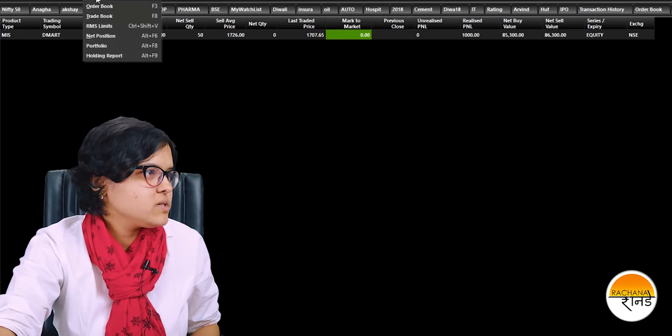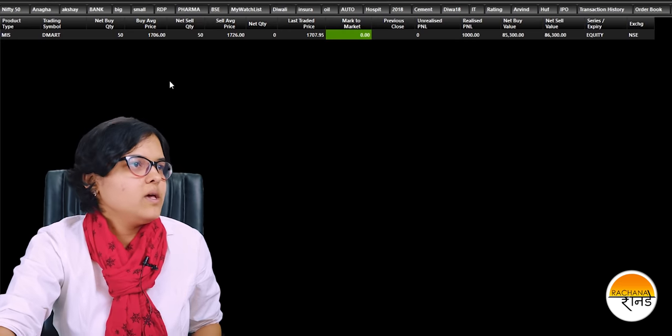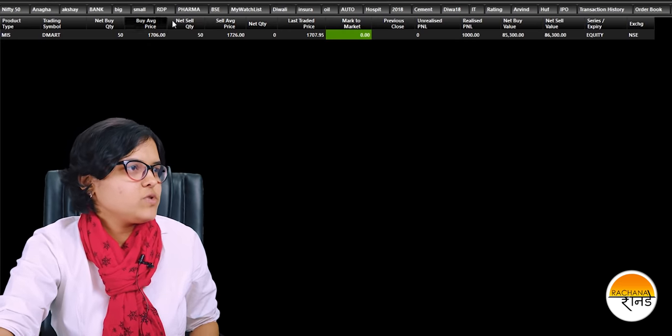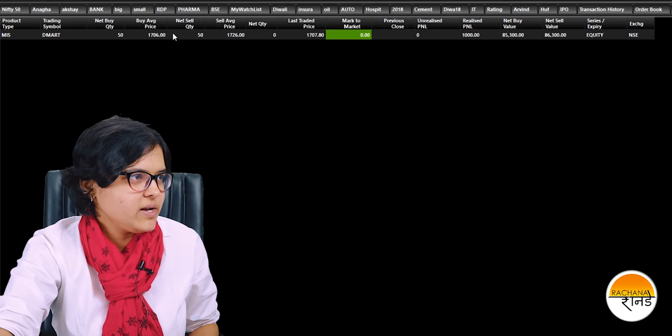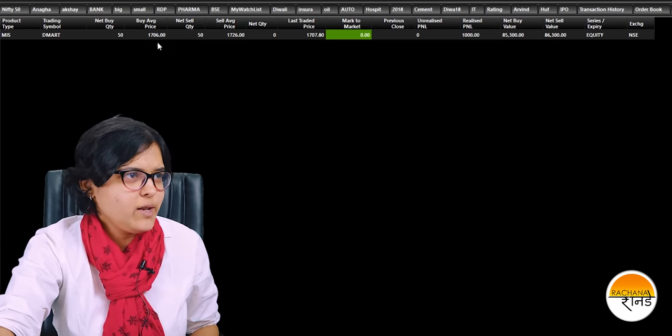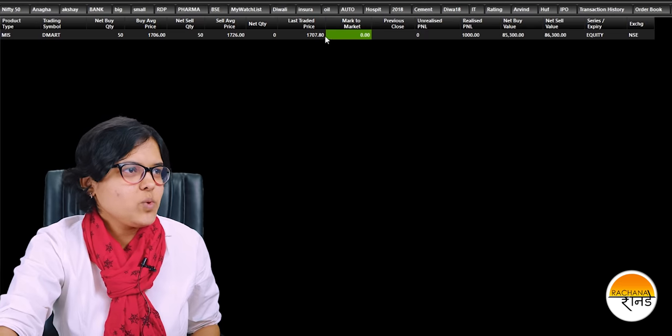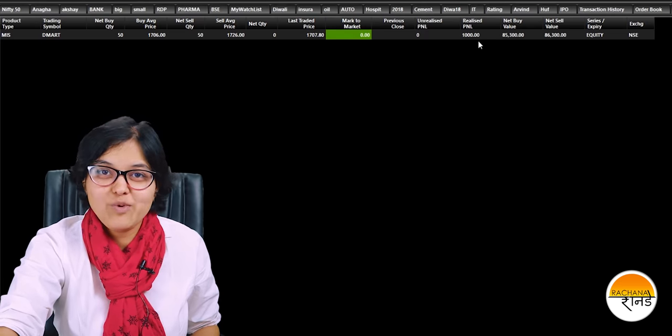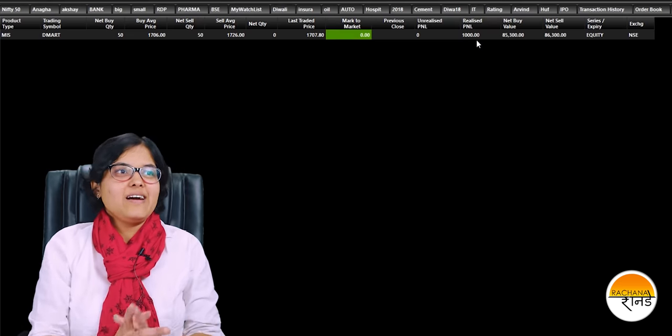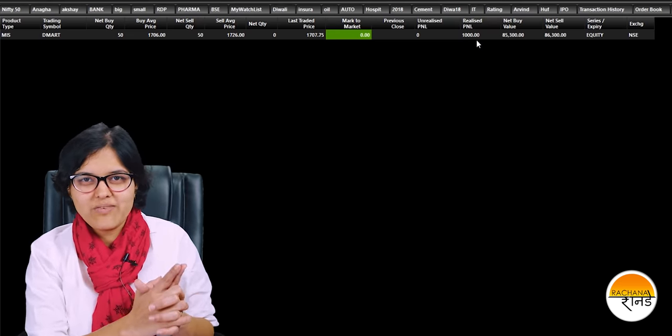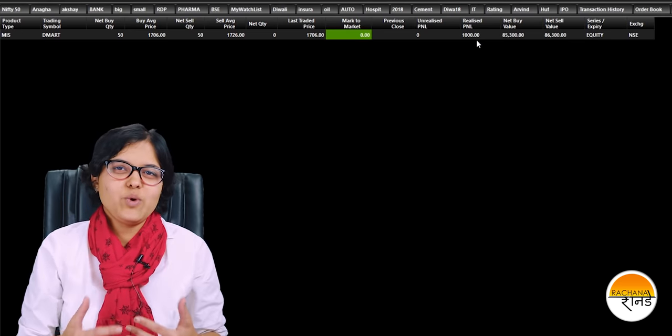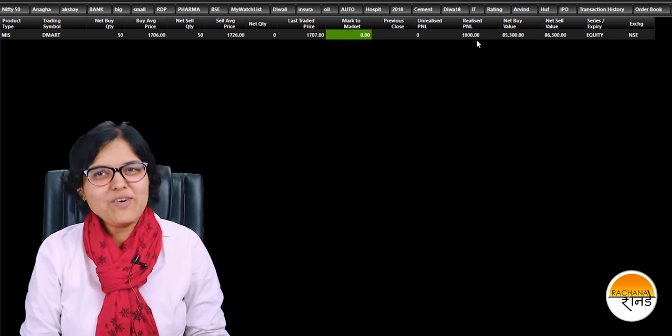So here it is. I went to reports and then into my net position. Here you can see, this is the DMART thing. I sold at 1726. I purchased it back at 1706, which is the average price. So got a difference of 20 rupees. And this is the realized profit, 1000 rupees profit in one day. Even if anyone is earning more than that in a single day, but this 1000 rupees profit done with proper studies is what gives you a lot of pleasure. I hope you have understood this.